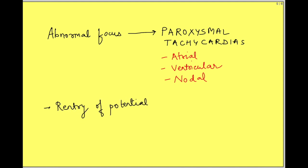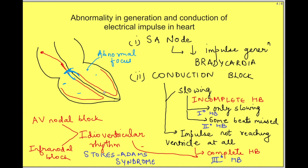Next, there can be re-entry of potential. See, normally there is a particular direction in which the electrical activity travels, and once the spread occurs, it does not spread back because the muscle cells are refractory.